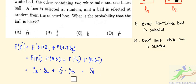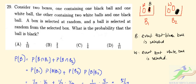Taking the sum, we get 1/4 + 1/6 = 3/12 + 2/12 = 5/12. The correct option is option A: the probability that the ball is black is 5/12.